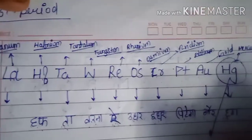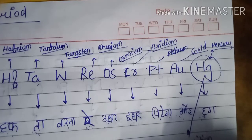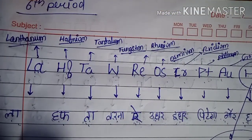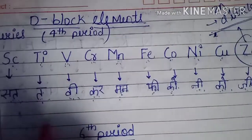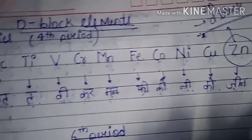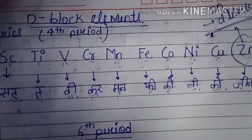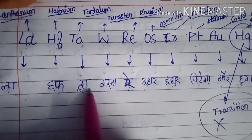One more thing — Hg (Mercury) is not counted as a transition metal, because in d-block elements, the electronic configuration is not incompletely filled — it is completely filled in both ground state and oxidation state. That is why Hg is not counted in the transition metal category.